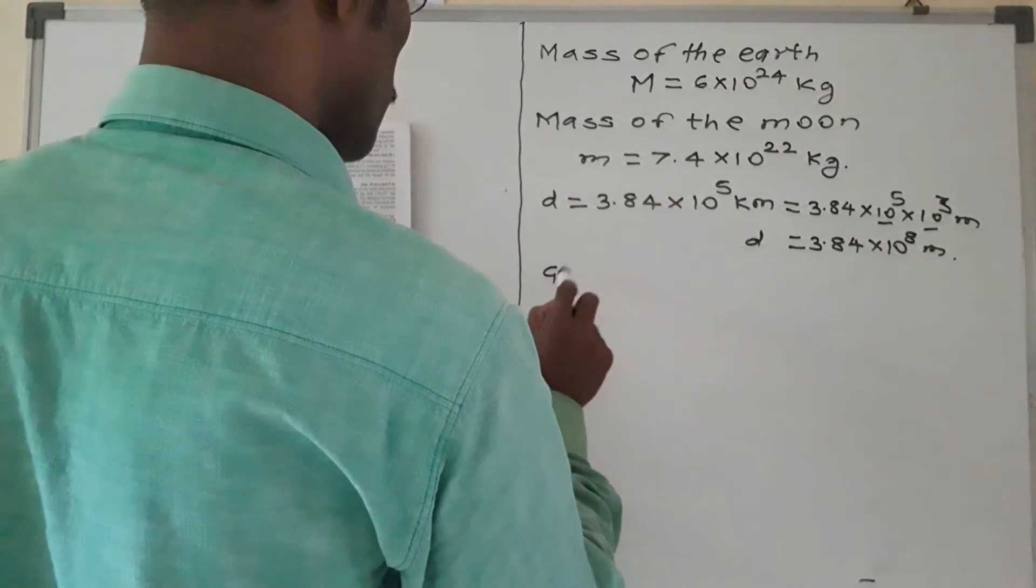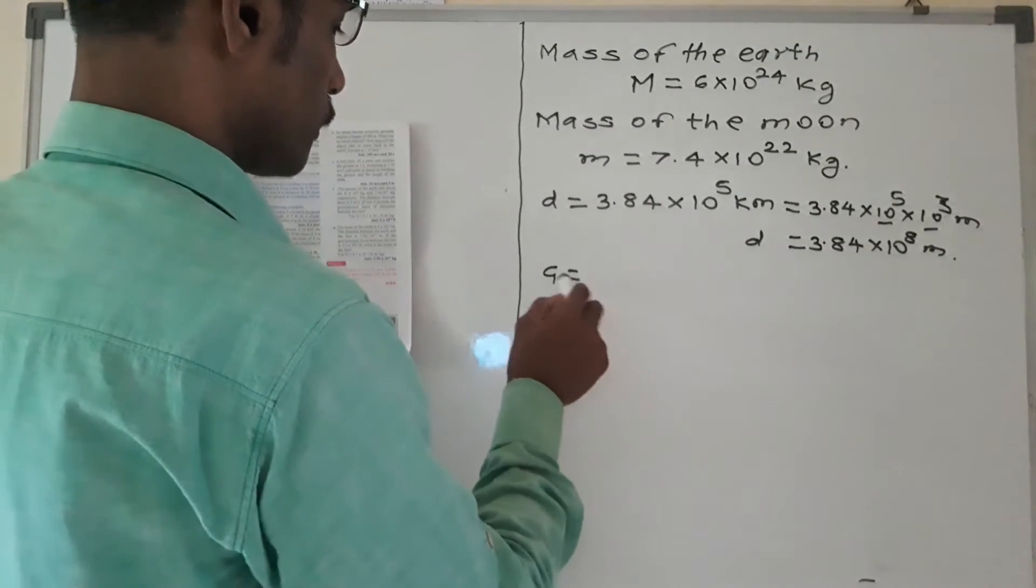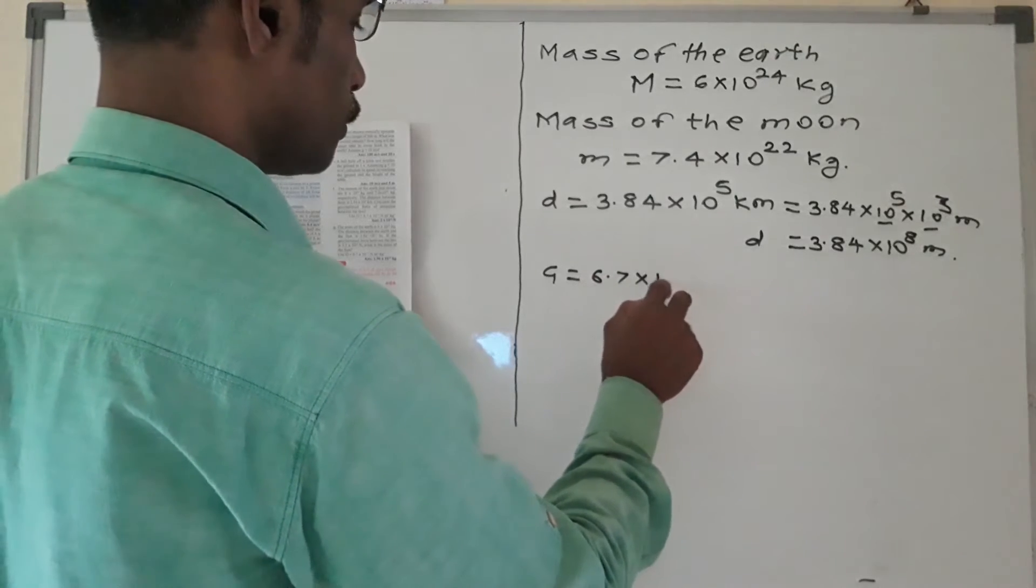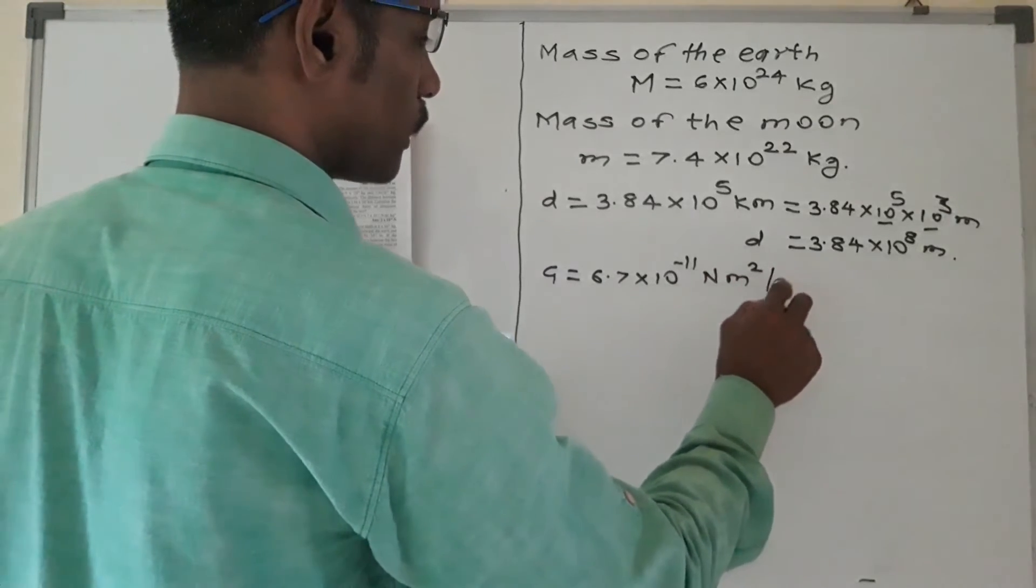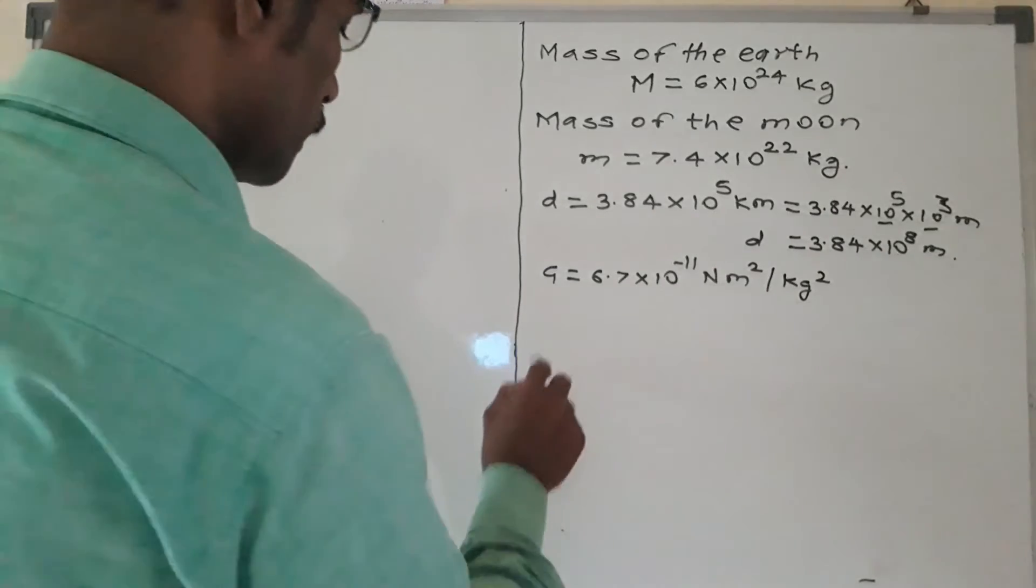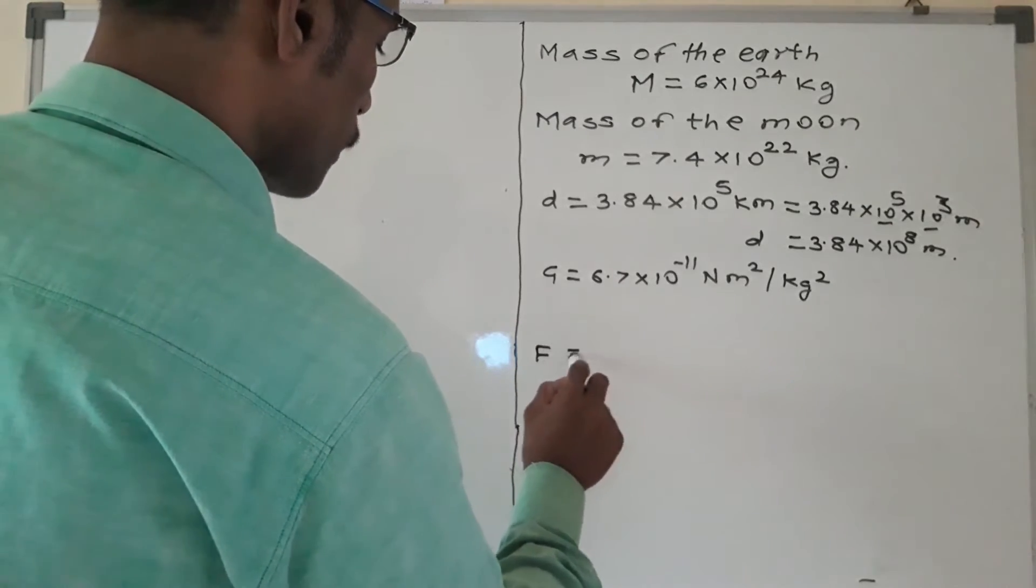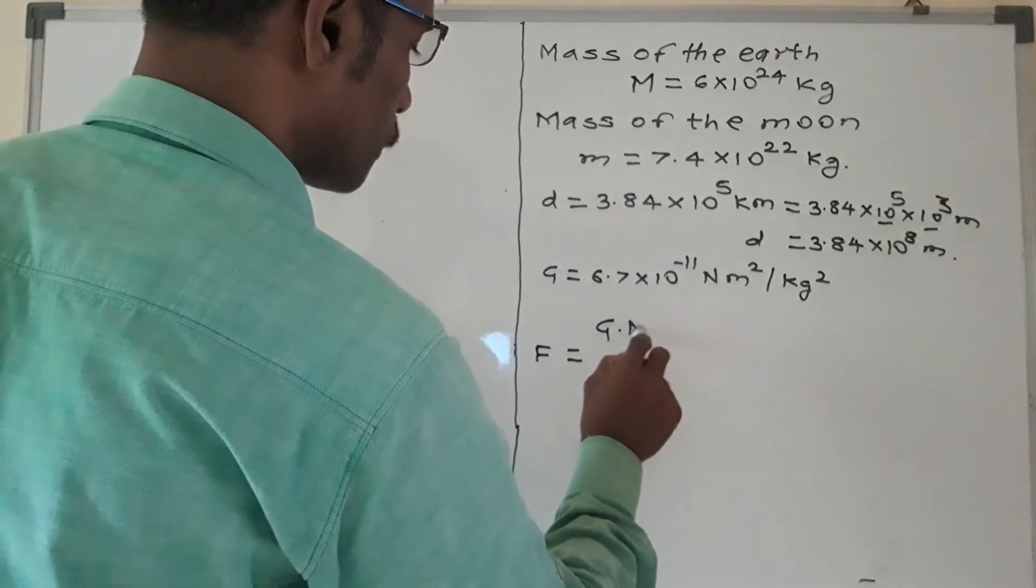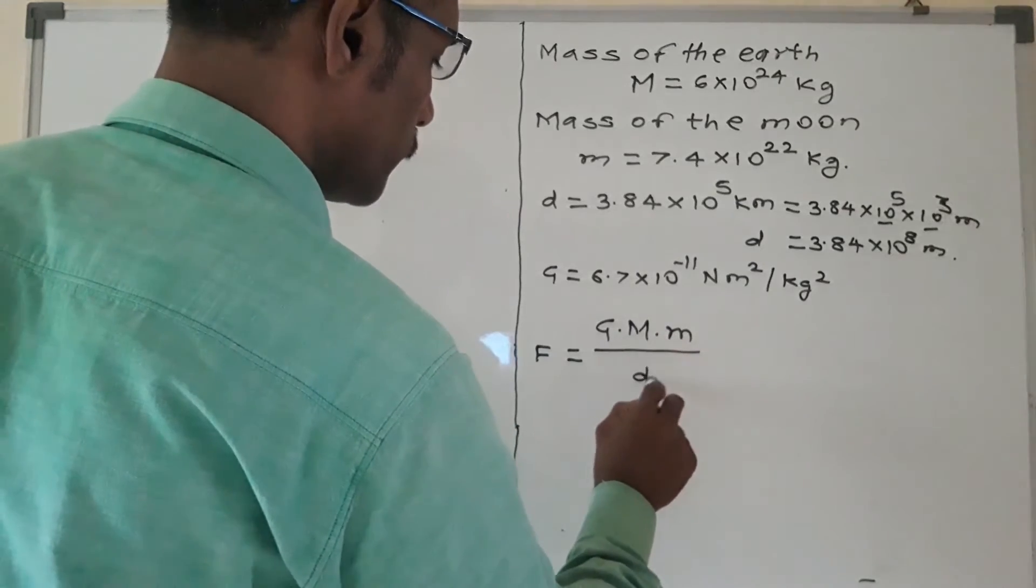As well as we have given the universal gravitational constant, G is equal to 6.7 into 10 raise to minus 11 newton meter square per kg square. This is given. Now we use formula. That is, force of attraction between these two: F is equal to capital G into capital M into small m upon d square.